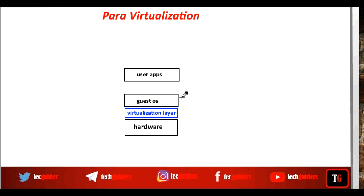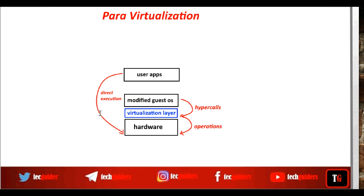In para-virtualization, the guest operating system needs to be modified. We modify the guest operating system and the sensitive and privileged instructions are replaced with hypercalls to the virtualization layer. The virtualization layer provides such hypercall interfaces or API call interfaces, and the sensitive and privileged instructions are replaced with such hypercalls. So here the guest operating system, instead of directly trying to communicate with the hardware, is trying to communicate with the hardware through the virtualization layer. For that, we need to modify the guest operating system, and the user level requests can be issued directly to the hardware. So the direct execution together with hypercalls is used to achieve para-virtualization.